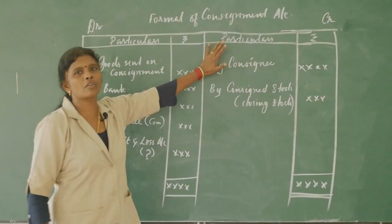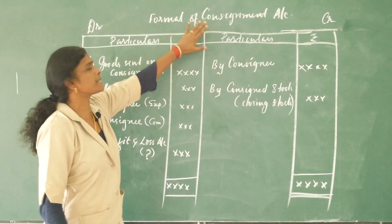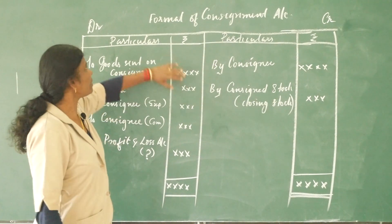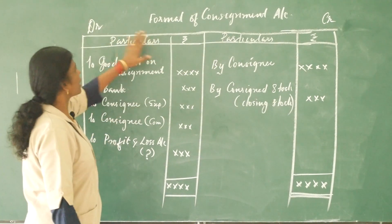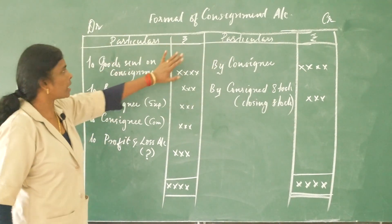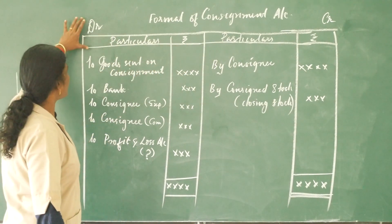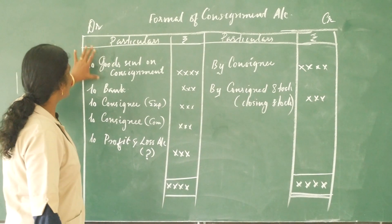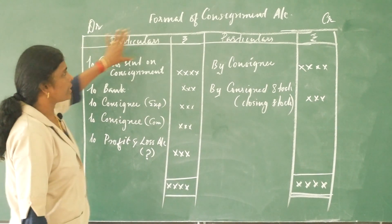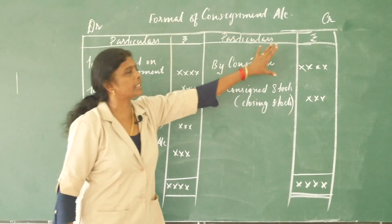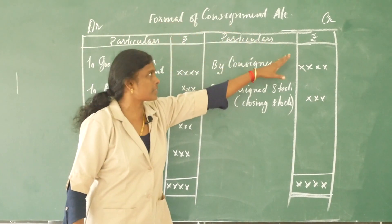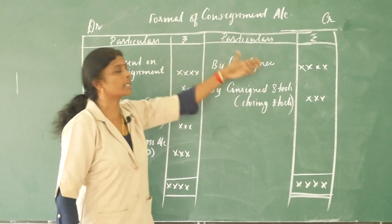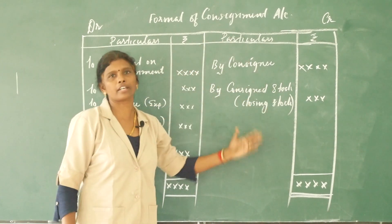This is the format of consignment account. We use a T-shape. Left-hand side is the debit side with debit side items, and right-hand side is the credit side with credit side items.